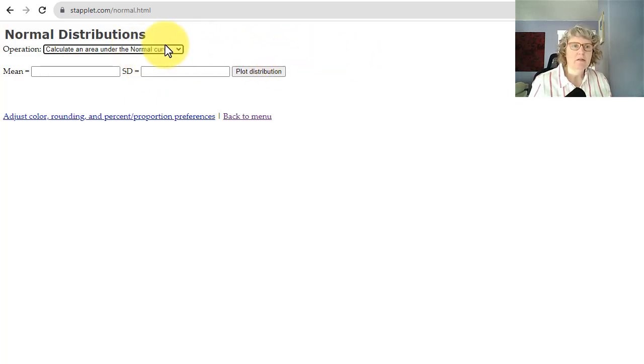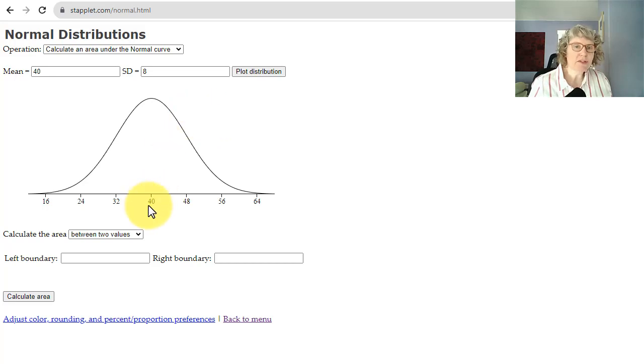Stick with the first one, which is the default. Calculate an area under the normal curve. And then our inputs, it's got the name normal. Our inputs are the mean and standard deviation. So we're going to put in our 40 for the mean, our 8 for the standard deviation and plot the distribution. Now you can check your numbers here or you could just get your numbers from staplet because it puts the mean in the center and it goes out three standard deviations on each side. This is the correct and standard way to label a normal curve.